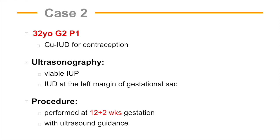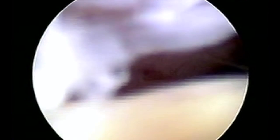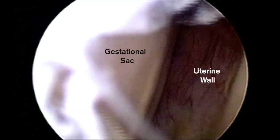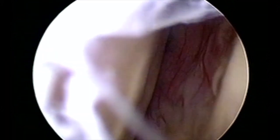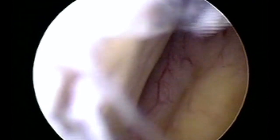Case 2 is a 32-year-old Gravida 2 Para 1 who had a copper IUD removed at 12 weeks and 2 days under ultrasound guidance. This case nicely depicts the challenges in visualization posed by the extensive intrauterine mucus and debris in pregnancy. We attempt to minimize removal and reinsertion of the scope to clean the lens. A track is created to pass the hysteroscope between the gestational sac and the lateral uterine wall. The hysteroscope is advanced slowly with minimal infusion of distension media to avoid disrupting the gestational sac.